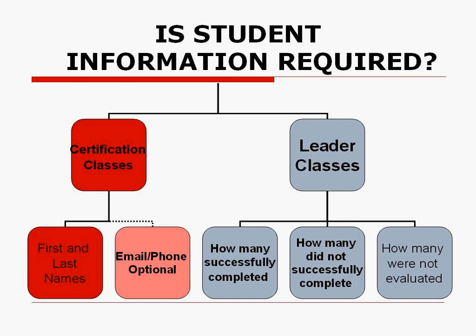If you're teaching a leader class — for example, a learn-to-swim through the WSI program or an HIV/AIDS course — you don't need the first and last names of the students. You just need to let us know how many successfully completed the class, how many did not successfully complete the class, and how many were not evaluated. An unsuccessful completion is somebody who attempted the assessment but didn't complete it, and not evaluated means somebody who did not attempt the assessment.